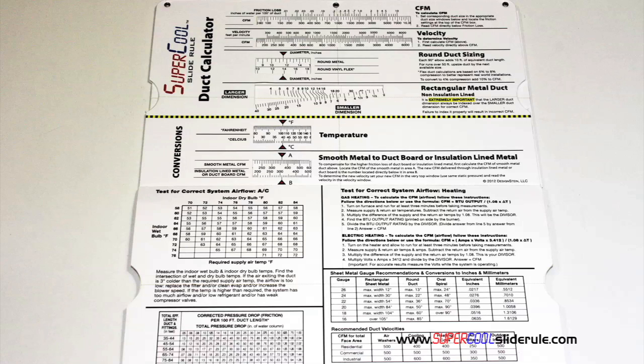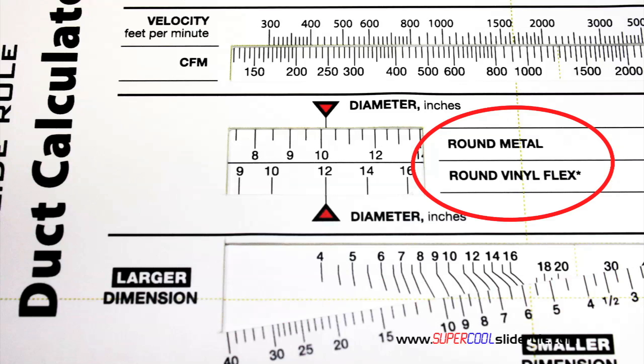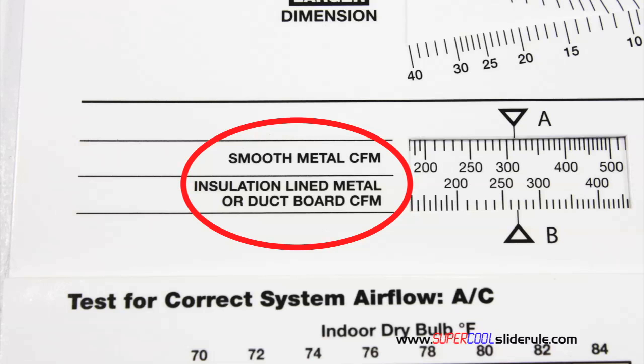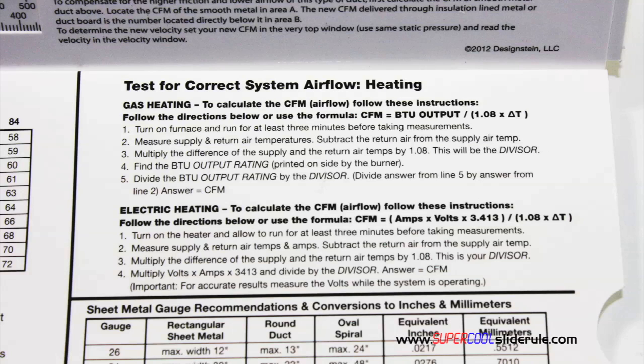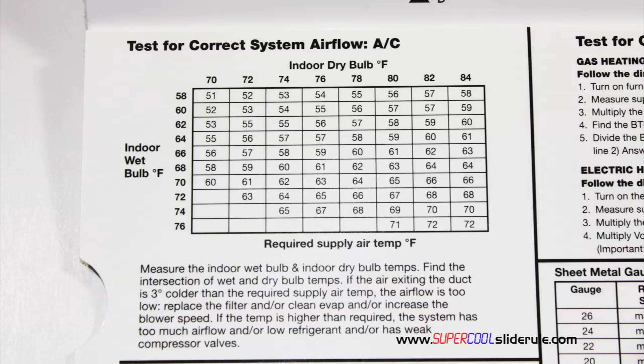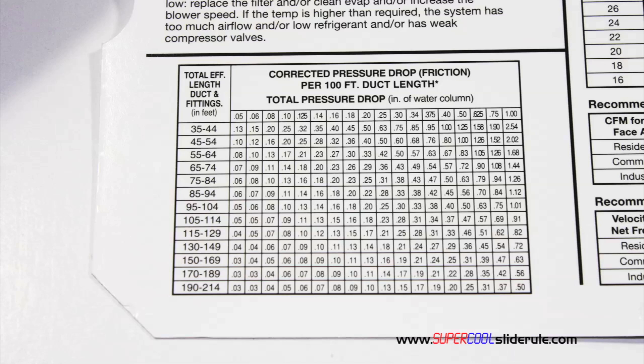Inside is packed with even more information. It performs sizing of both metal and flexible duct. It has the only direct reading conversion from smooth metal to insulation lined metal we've ever seen. The majority of technicians have never been taught that if the insulation is on the inside of the ductwork, you cannot size it with a regular duct calculator. It has step-by-step directions for determining airflow through a gas furnace, electric furnace, or an air conditioning unit. It also has pressure drop multipliers for ductwork, as well as recommended velocities.